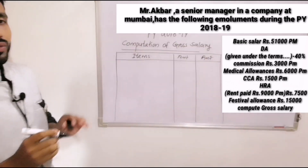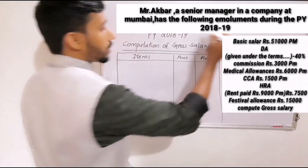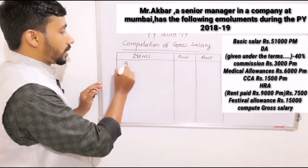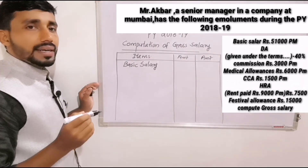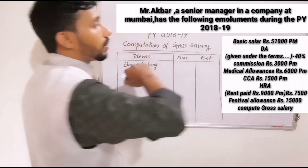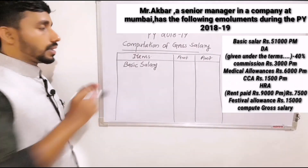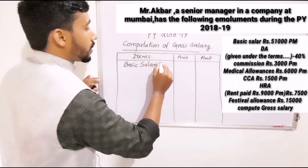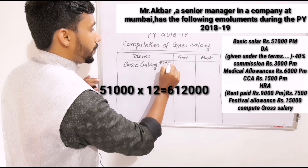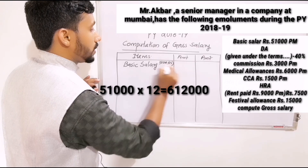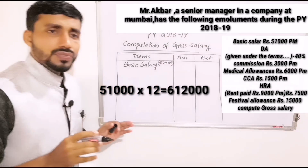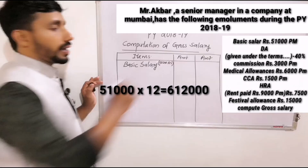The first item is basic salary. The basic salary is fully taxable. The basic salary is $51,000 per month, so $51,000 into 12 equals $6,12,000.